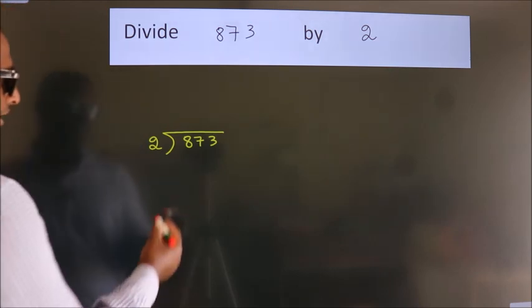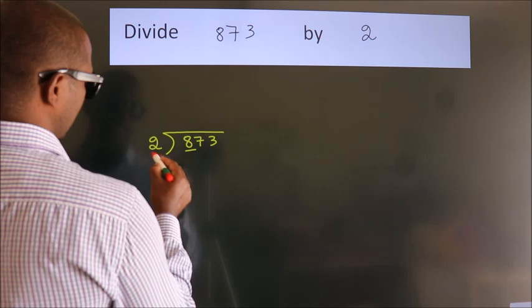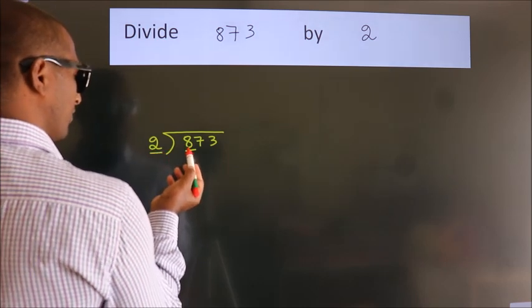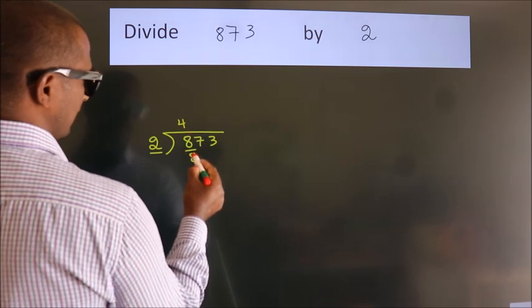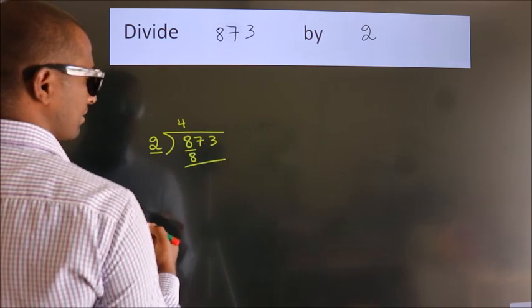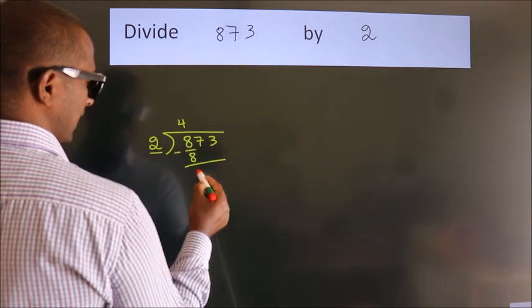Next. Here we have 8, here 2. When do we get 8? In 2 table, 2 folds 8. Now we should subtract, we get 0.